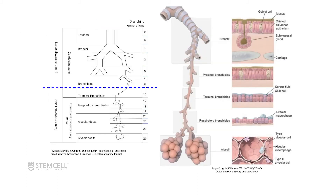The airway can be divided into different sections based on branching generations, and you can divide them into large or small airways based on the number of branches. You can also separate the airway into different types based on the epithelial cells that line them. In the large airway, we have ciliated columnar epithelium and goblet cells, which secrete mucus. In the smaller airways, the epithelium becomes shorter and goblet cells are replaced by club cells. The alveoli contain type 1 and type 2 alveolar cells, which are quite thin to allow for gas exchange.